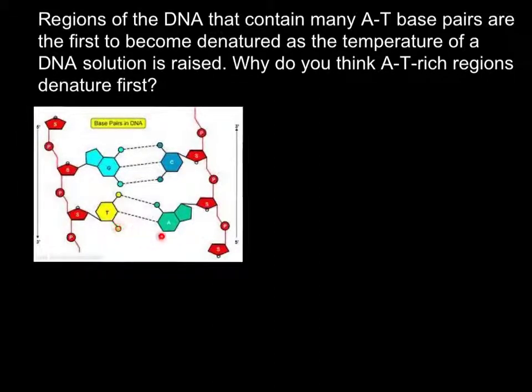And you would see that, for example, thymine and adenine are connected with a double hydrogen bond, and guanine with cytosine are connected with a triple bond. And of course, triple bond is much stronger than double bond.